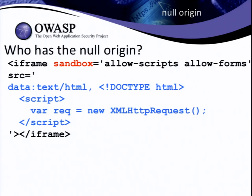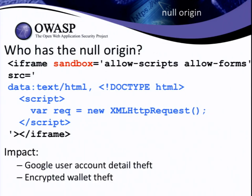Using just a few lines of code, any website out there can get hold of the null origin. This meant I could read data from that Google PDF viewer, including users' account details, their Google Plus profile and user ID. I could also grab encrypted backups of users' Bitcoin wallets. They are encrypted, yes, but they're encrypted with users' passwords chosen on a site which at the time had no password strength meter. So I could launch an extremely fast offline GPU-assisted brute force attack against their wallets, and if I crack it, I've got all their Bitcoins.